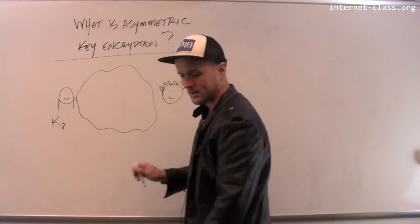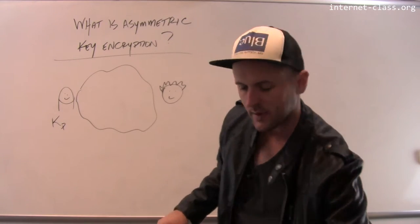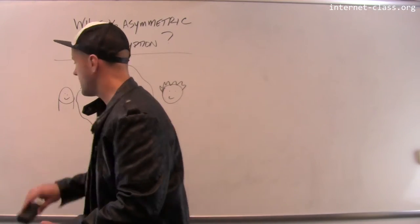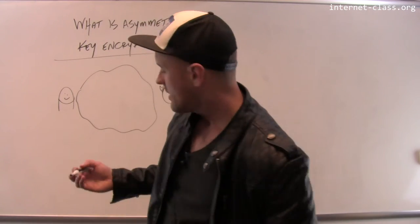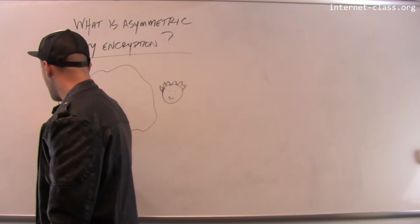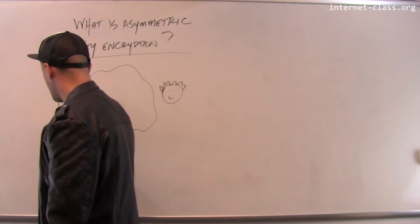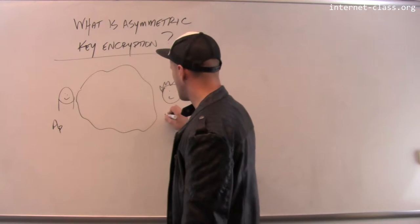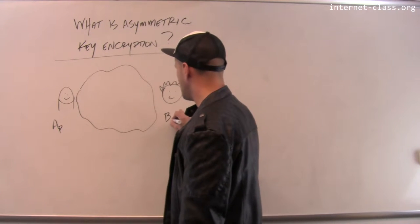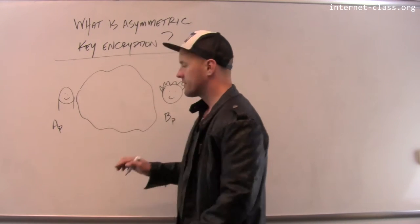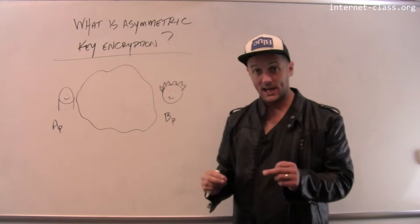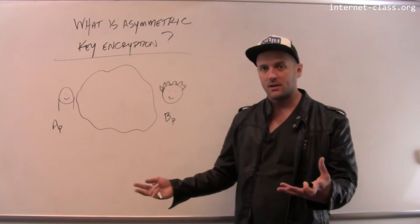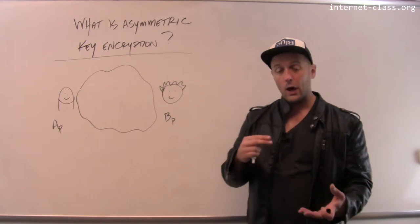Alice's private key is called AP, and Bob's private key is called BP. That's the private key — that's how they decrypt messages that are sent to them.